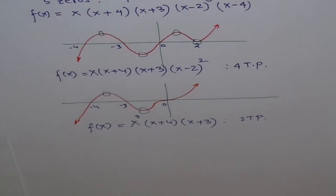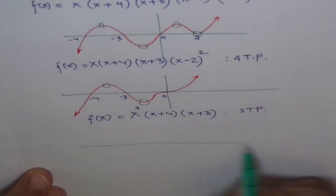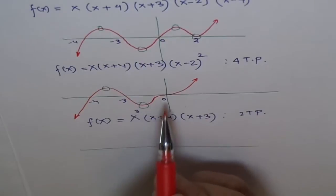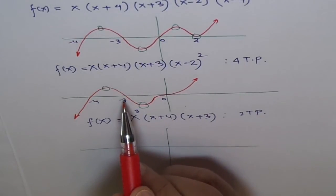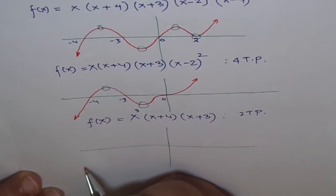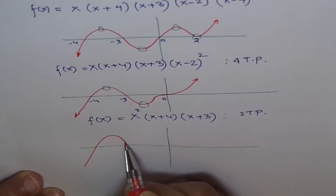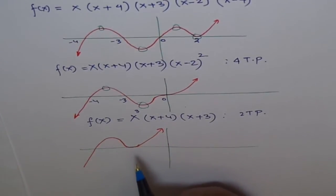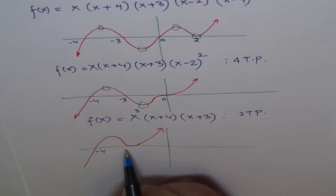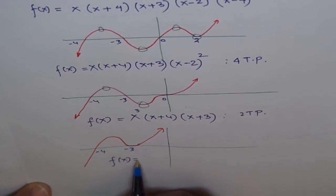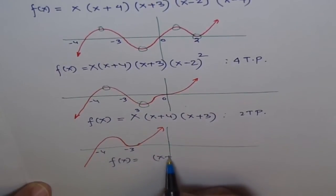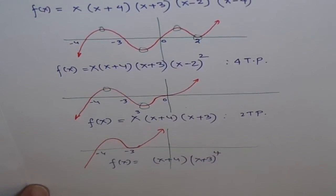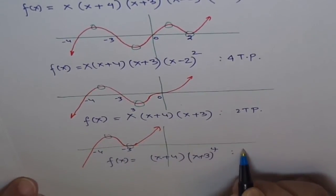Now let's make more changes. When we bring zeros together here, this becomes a degree 5 polynomial where one zero at minus 3 has multiplicity 4. So f(x) = (x+4)(x+3)⁴. The bend at minus 3 is wider because it's degree 4, not just degree 2. How many turning points this time? Just 2. So we get 2 turning points.